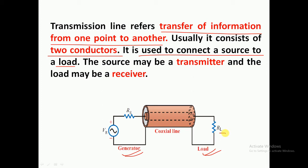On the load side, RL is there — that is the load resistance. On the source side, we have RG, that is the source resistance, as well as the source voltage, which is sinusoidal in nature. This is one example shown with the help of a coaxial wire, where the source and the load are connected via a transmission line over a distance.